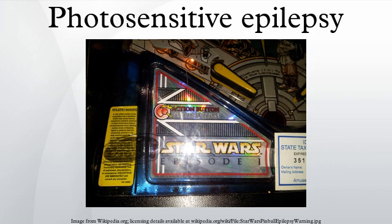People with PSE experience epileptiform seizures upon exposure to certain visual stimuli. The exact nature of the stimulus or stimuli that triggers the seizures varies from one patient to another, as does the nature and severity of the resulting seizures. Many PSE patients experience an aura or feel odd sensations before the seizure occurs, and this can serve as a warning to move away from the trigger stimulus. The visual trigger for a seizure is generally cyclic, forming a regular pattern in time or space.